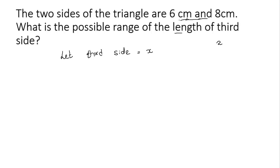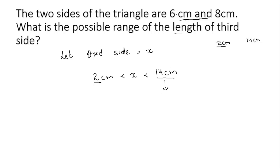The length also cannot be greater than the sum of these two sides. The sum of the two sides is 14 cm, so the length cannot be greater than 14 cm and cannot be smaller than 2 cm. Written as an inequality: 2 cm is smaller than the length of the third side, and the length of the third side must be smaller than 14 cm. This 14 cm is the sum and 2 cm is the difference of the two sides.